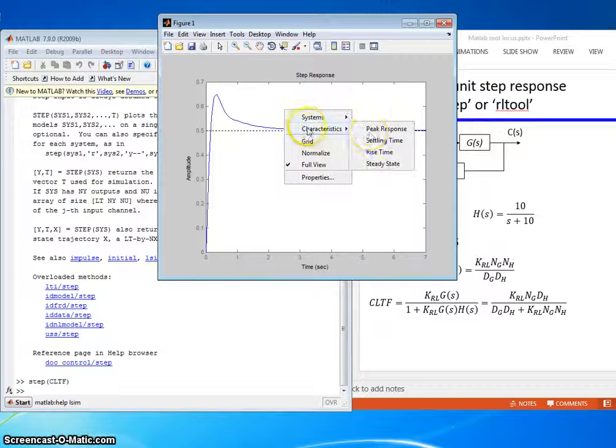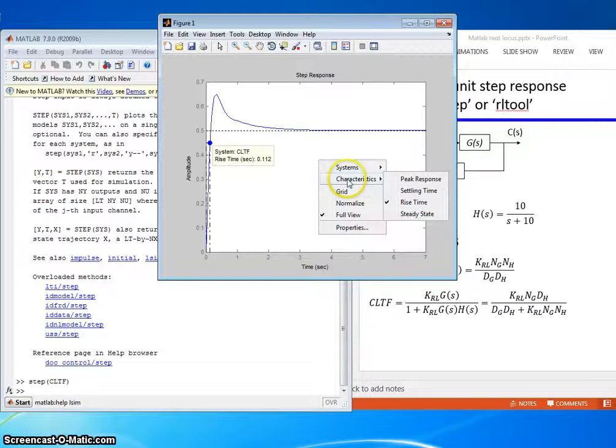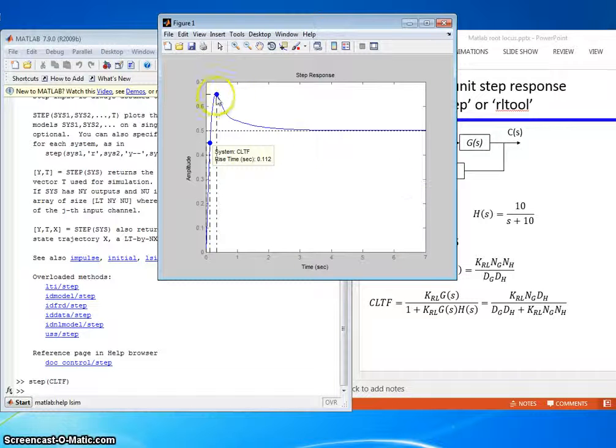We can add things like the rise time. You can click on that blue circle and it'll tell you what the rise time is. We can add the peak response. Click on that and it'll tell us that the peak amplitude is 0.649, the overshoot is 29.8%, and it occurred at a time value of 0.334 seconds.